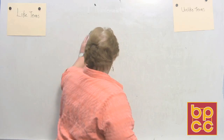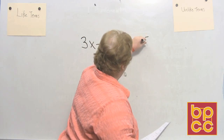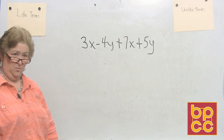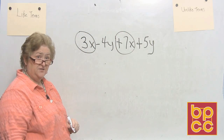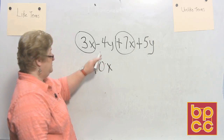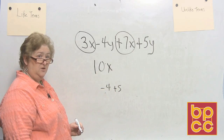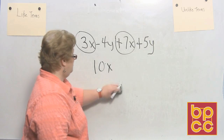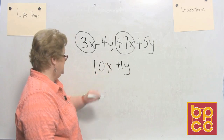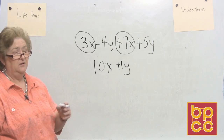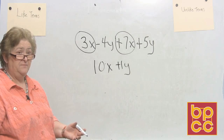Let's try: 3x minus 4y plus 7x plus 5y. We've got x's and y's that belong together. Grab 3x and positive 7x — that's 10x. Now negative 4y and positive 5y: negative 4 plus positive 5 gives positive 1y. So the answer is 10x plus y — or 1y plus 10x; it doesn't really matter as long as the signs are correct.